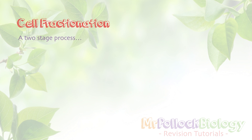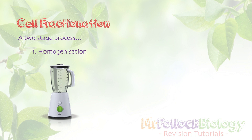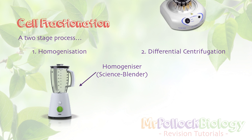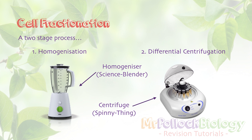Cell fractionation is a two-stage process. The first stage is known as homogenisation and basically involves bashing up the cells and breaking open the cell walls and cell membrane to release the organelles. To do this we need a piece of scientific equipment called a homogeniser, which is essentially just a science-y blender — all it's designed to do is bash up, mince up, and break open cell walls and cell membranes. The second stage is called differential centrifugation — differential because we can differentiate out or split out different organelles by centrifuging them. All a centrifuge does is spin stuff, and we have control over how quickly we spin things.